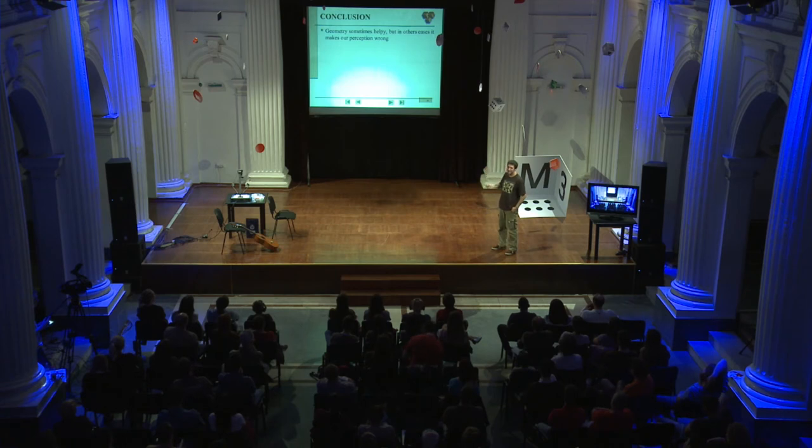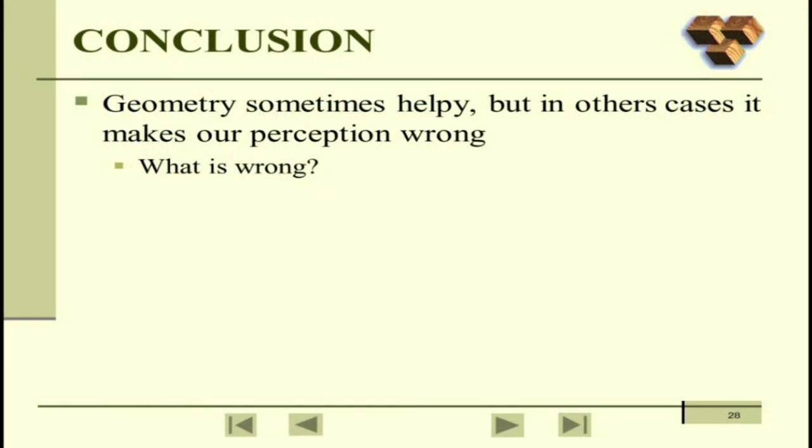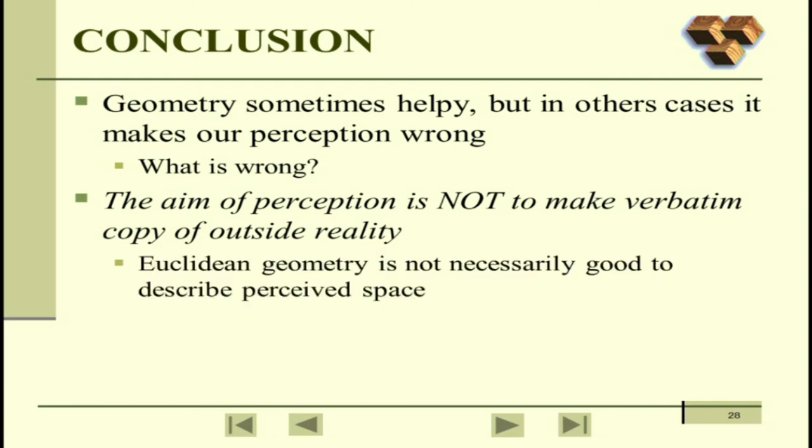So to conclude, geometry sometimes, it's not healthy, it helps. It's an error, sorry. But in other cases, it makes our perceptions wrong. But what is wrong? I'm not trying to behave as a politician. What is wrong? We all know what is wrong. But we still vote wrongly. But what is wrong in perception? The aim is not to make verbatim copy, one-to-one copy of outside reality. The aim is actually to design such a model in which our actions will be successful. That's why Euclidean geometry is not necessarily good to describe our perceptions. Because the final aim is to design such space in which we will behave more precisely. And this would be the end.